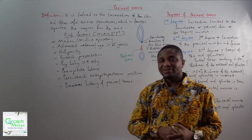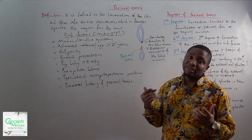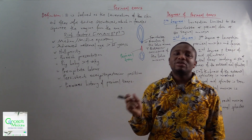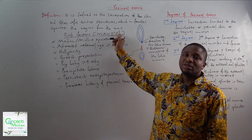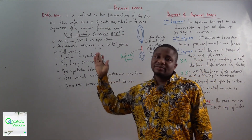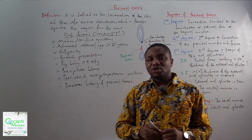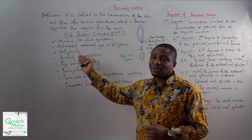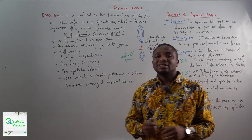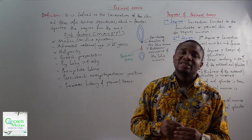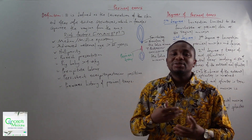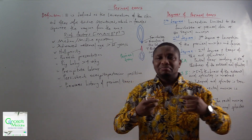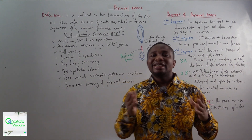Let's look at the risk factors of perineal tear. We can use the acronym MANBP. The M stands for median or midline episiotomy. The A is advanced maternal age, greater than 35 years. The N is nulliparity — because in nulliparous women the perineal muscles are stiff and unable to relax adequately to withstand the bearing of the weight of the incoming fetus, and hence they easily get torn.